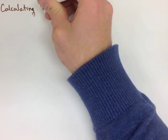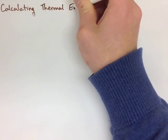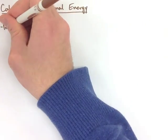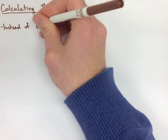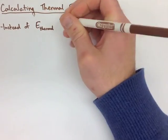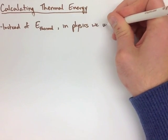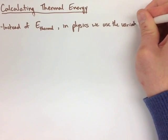We have a new formula that we use to calculate the thermal energy of an object. This is just like when we use our energy kinetic formula or our gravitational energy formula. But instead of calling it E-thermal, because there's so many different variables for T in physics, we just use the variable Q.